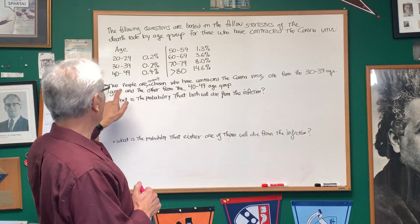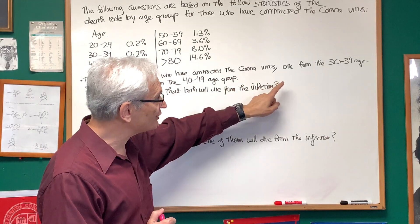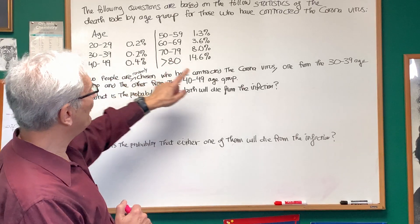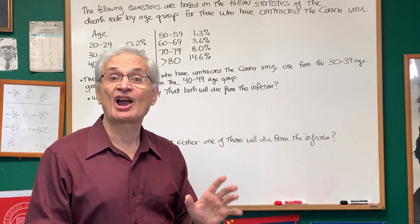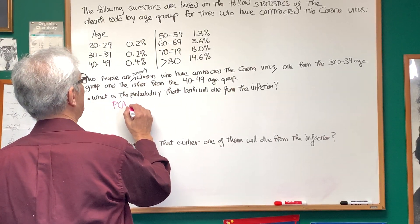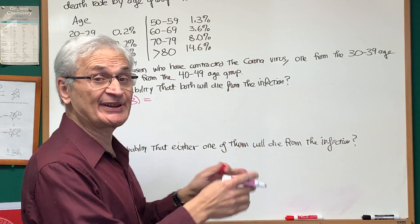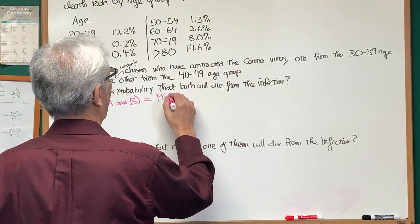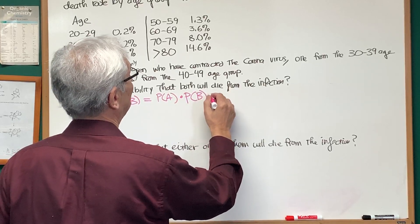Now let's look at the first question. Two people are randomly chosen who have contracted the coronavirus, one from the 30 to 39 age group and the other from the 40 to 49 age group. What is the probability that both will die from the coronavirus? Well, the probability of A and B, when A and B are independent events (and these are independent events), is the product of the probabilities. That is, the probability of A times the probability of B.